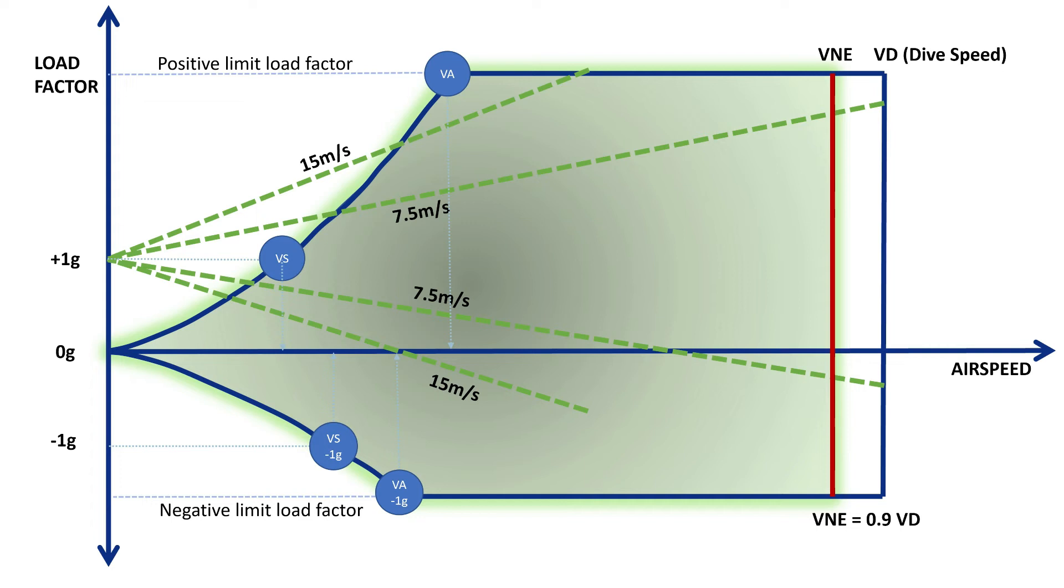Don't worry, we won't say any more about these factors except that the gust lines need to be constructed at numerous weights and altitudes rather than just once as in this case to see where they overlay the manoeuvring envelope. In this example the intersection between the positive 15 meters per second gust line and the limit load factor defines a convenient structural cruising speed VNO.